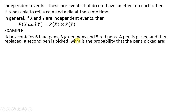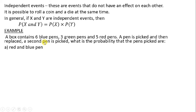A box contains 6 blue pens, 3 green pens, and 5 red pens. A pen is picked and then replaced, and a second pen is picked. What is the probability that the pens picked are red and blue? We need to find the total possible outcomes: 6 plus 3 plus 5 gives us 14. There are 5 red pens, so the probability of picking red is 5 over 14.